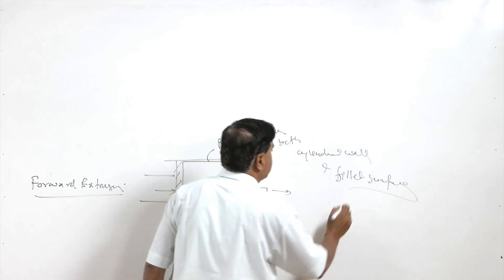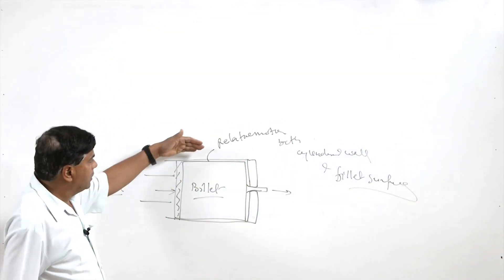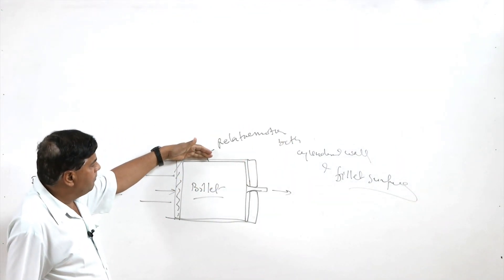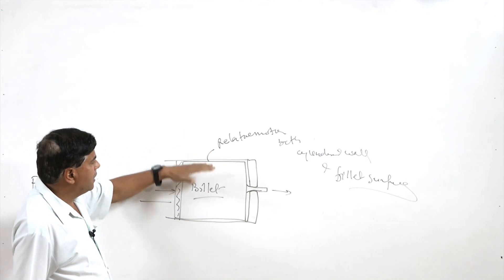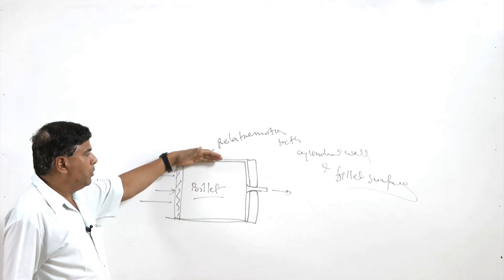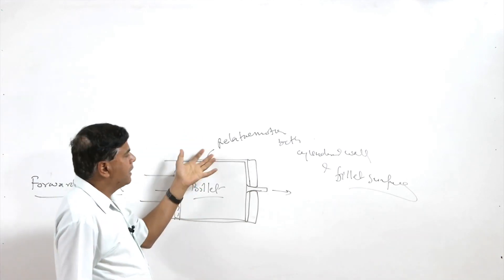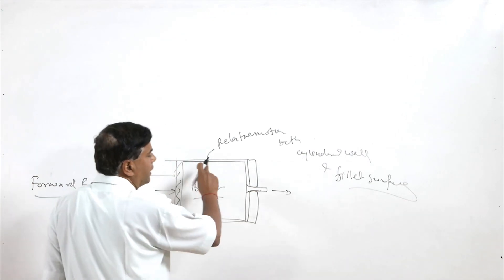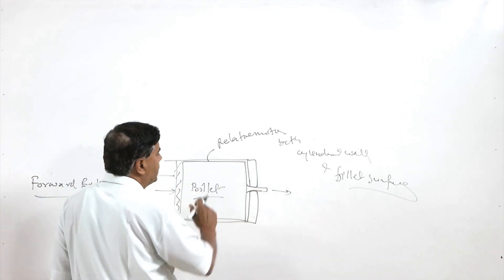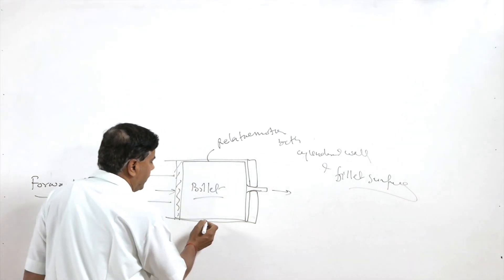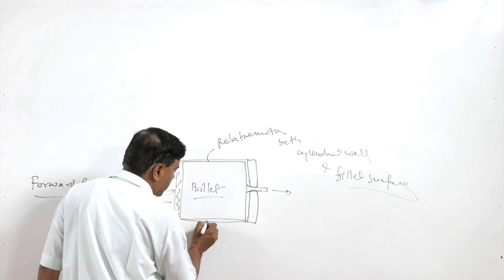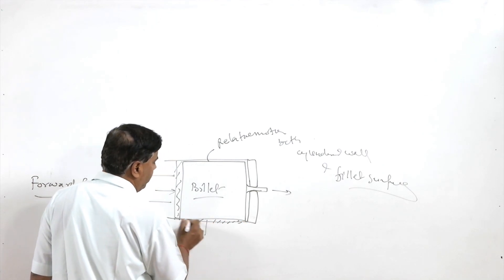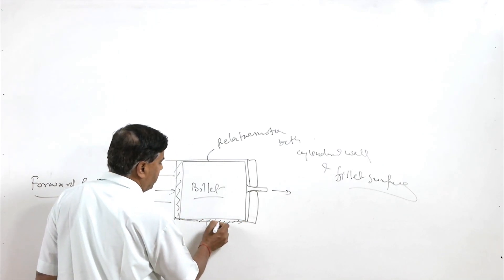This causes a lot of friction. The wall of the cylinder and the billet both have relative movement with each other — there is relative movement between the two — and at high temperature a lot of frictional forces are present.